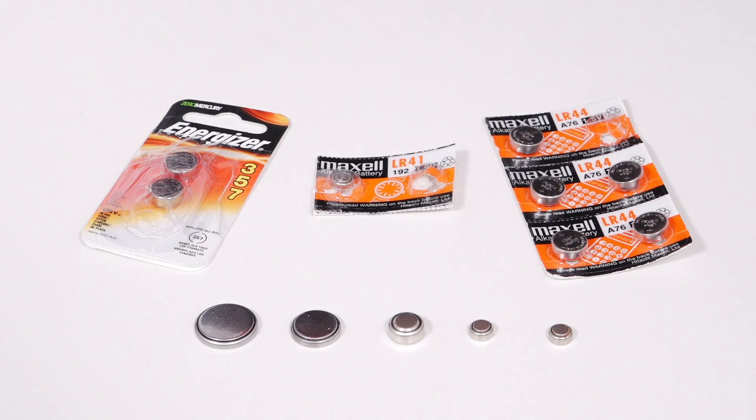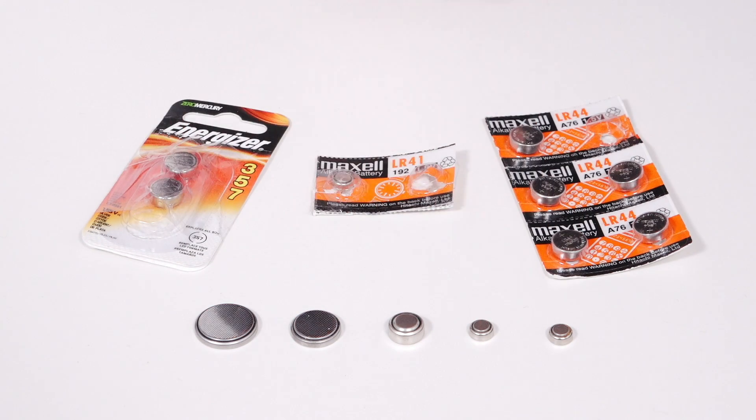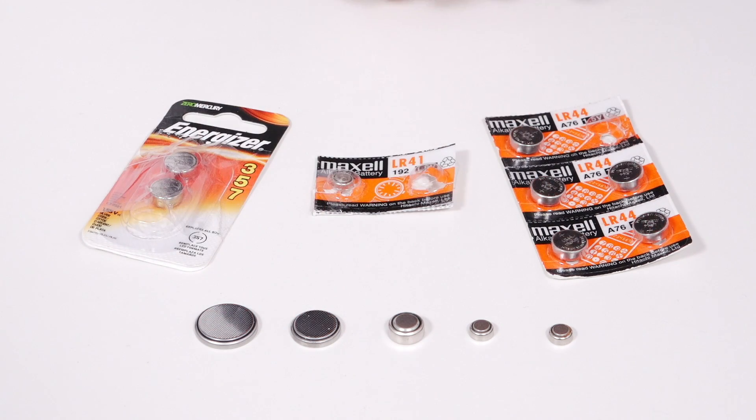And the trade-off for their very small size is they can't give you a lot of current, so not good for high power electronics. Really good for very low power devices. Coin or button cell batteries, as they're sometimes called, all have about the same shape but they come in different sizes depending on their usage.